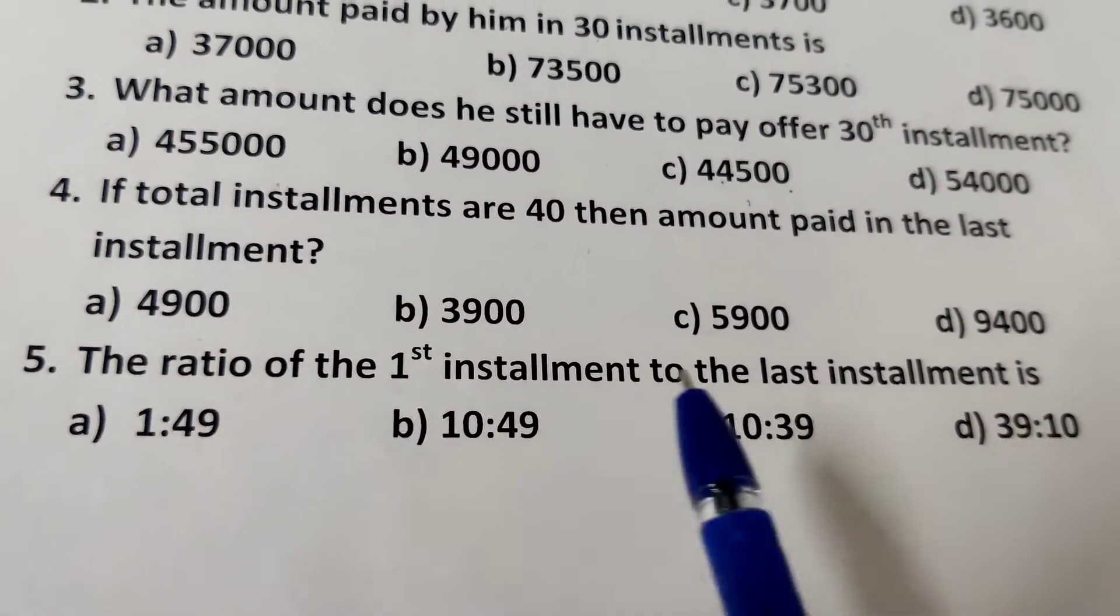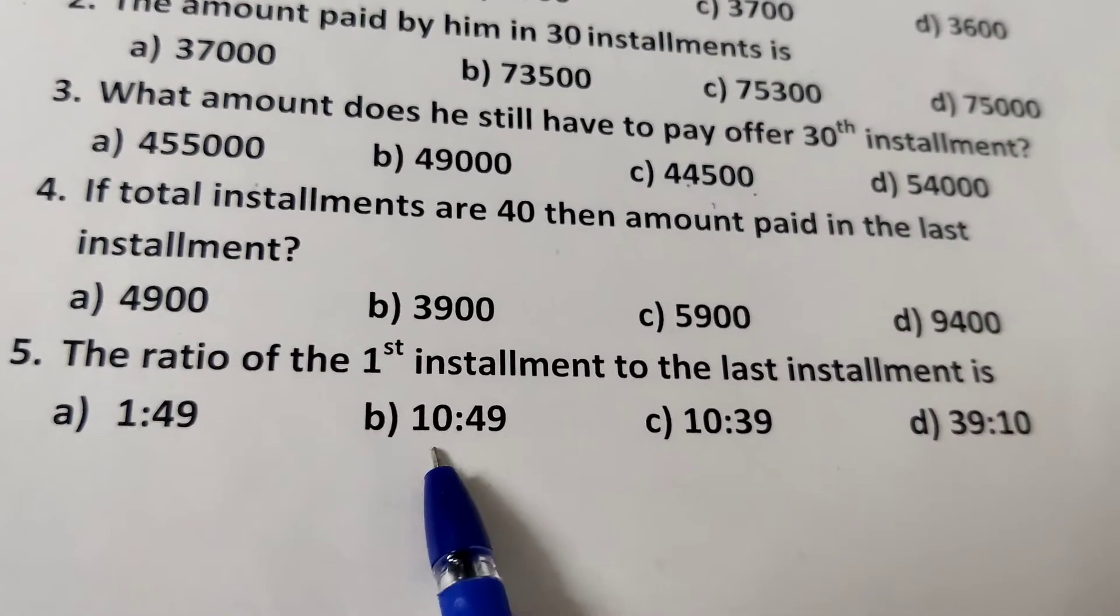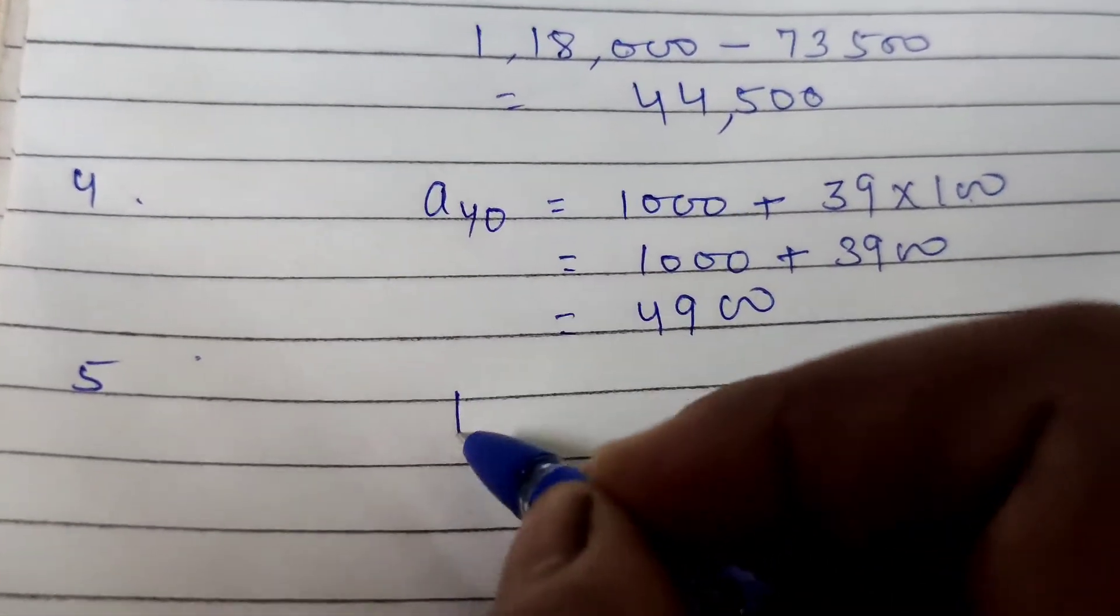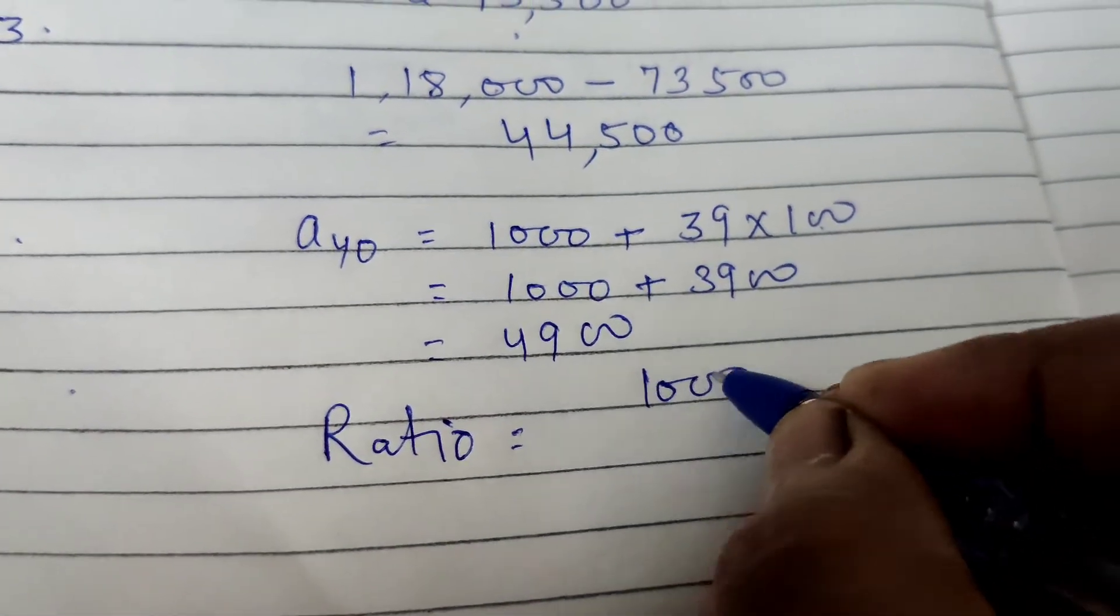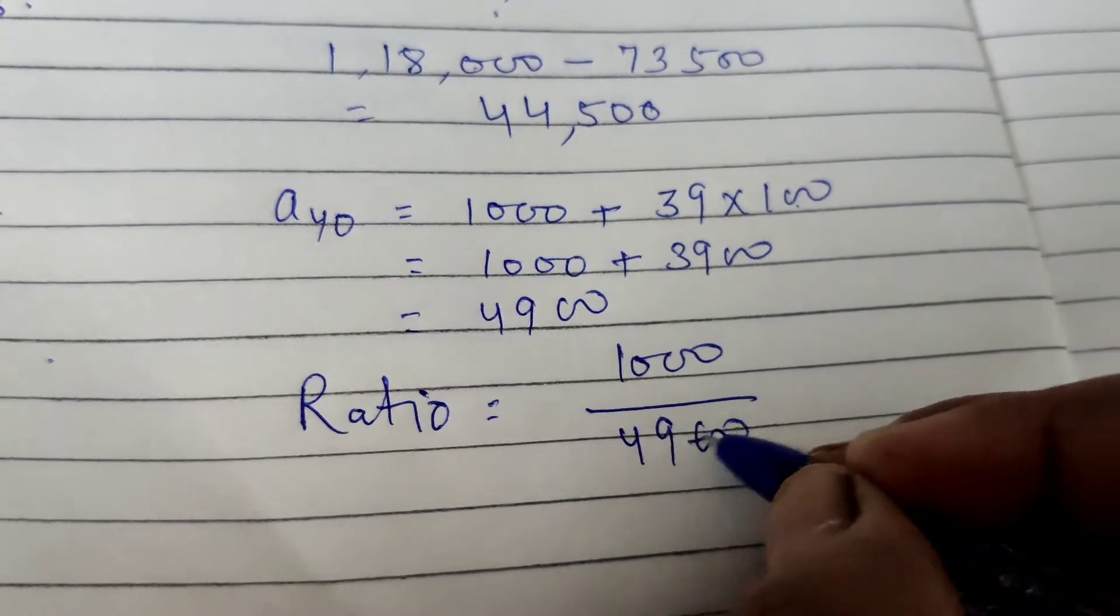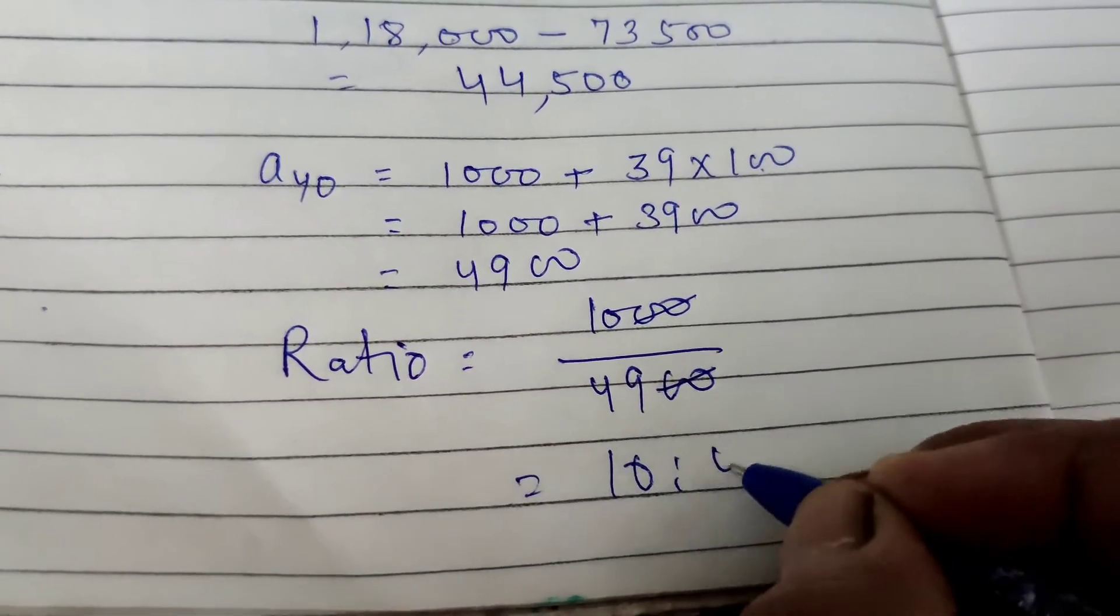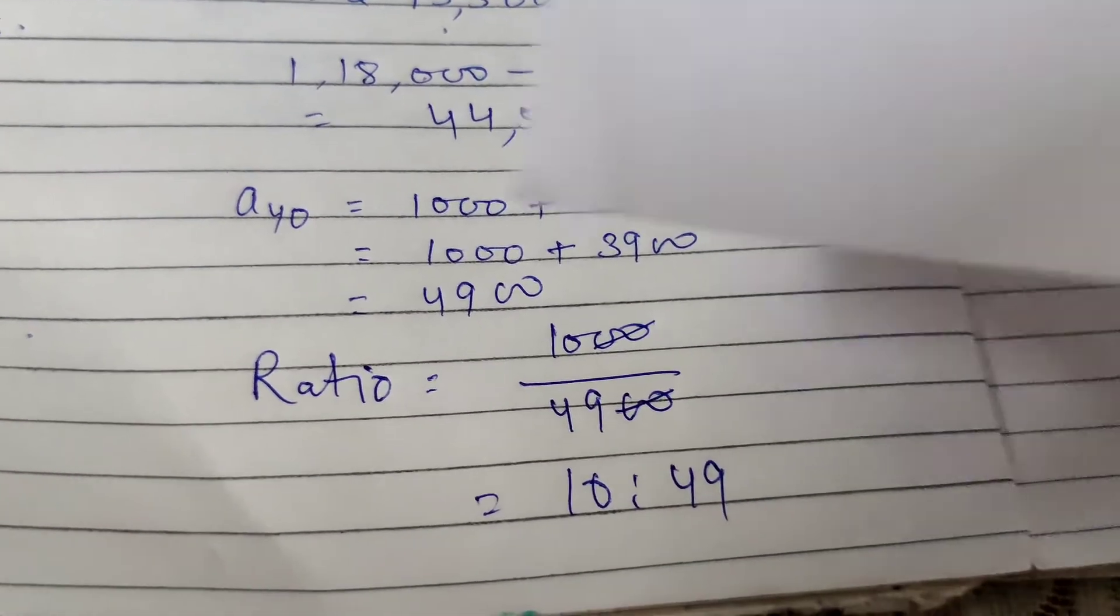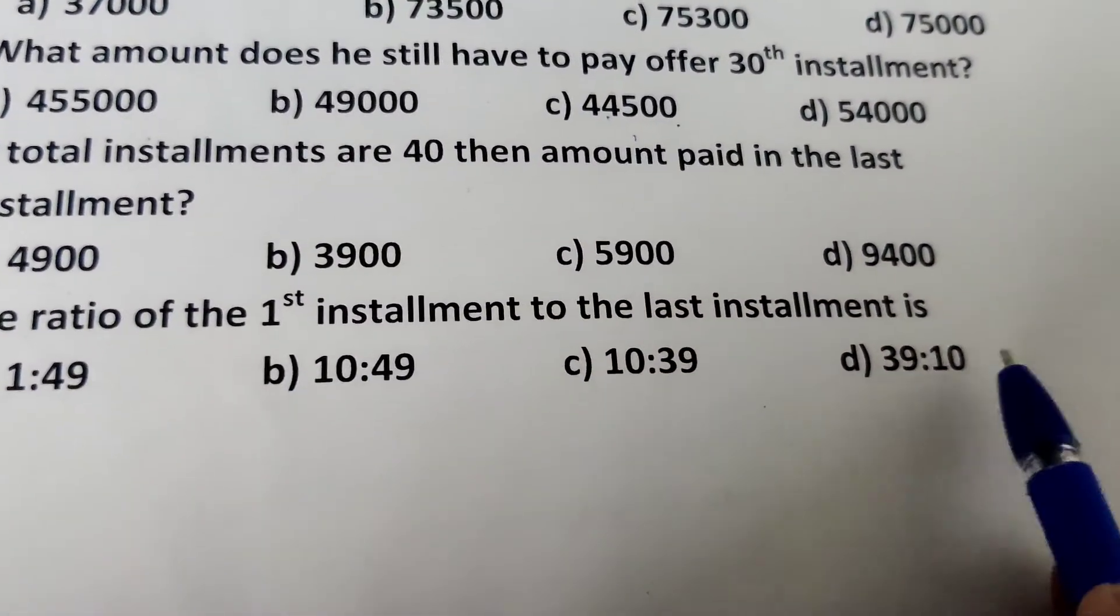The ratio of the first installment to the last installment is. 1 is to 49, 10 is to 49 and so on. The first installment is rupees 1000 and 40th installment is 4900. Zero cancel. The ratio is 10 is to 49. The right answer is 10 is to 49, B option.